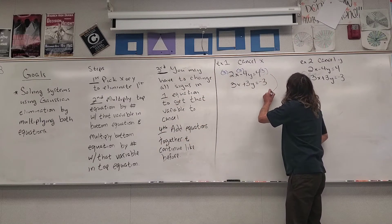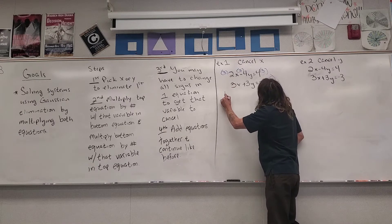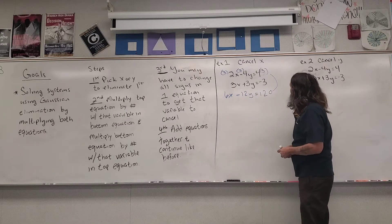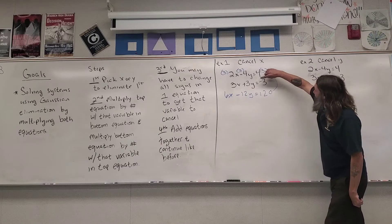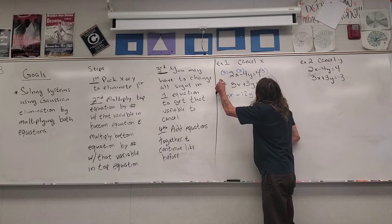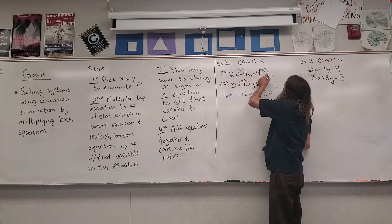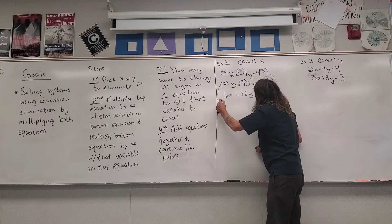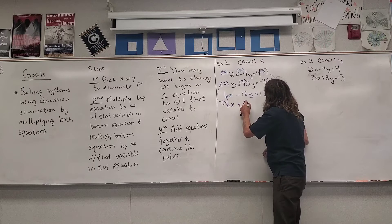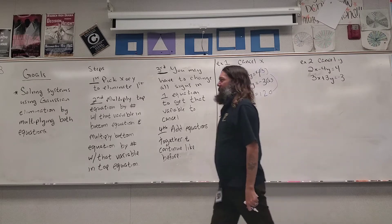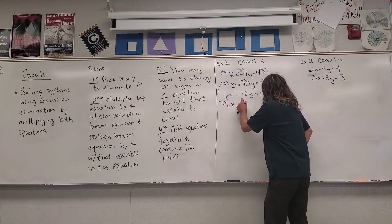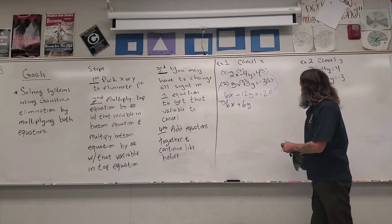So what I get here is 6x minus 12y equals 12. Now I'm going to multiply everybody in the bottom equation by the number with x in the top equation, so everybody in the bottom equation gets multiplied by two. Two times 3x is 6x, two times 3y is 6y, and two times negative 3 is negative 6.